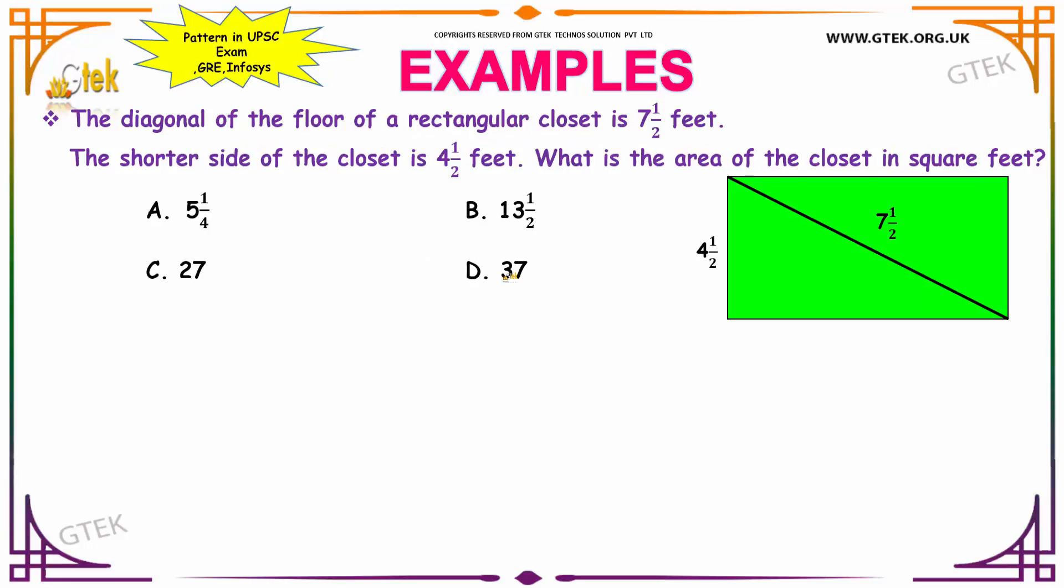Let us see our next interesting example. It is given that the diagonal of the floor of a rectangular closet is 7.5 feet. So, we have to find the area of the closet in square feet.